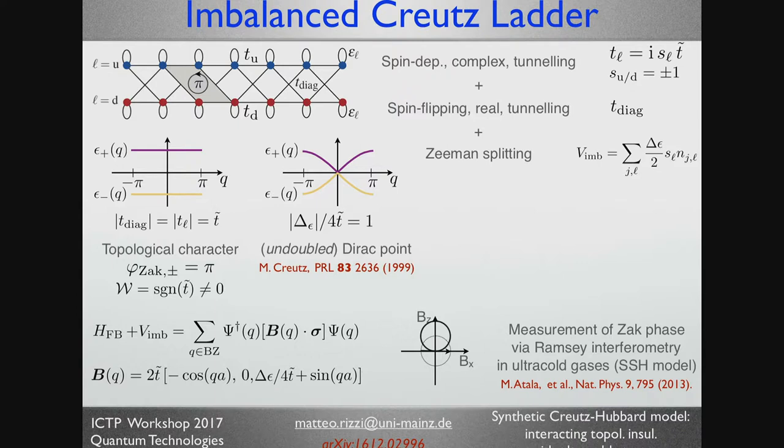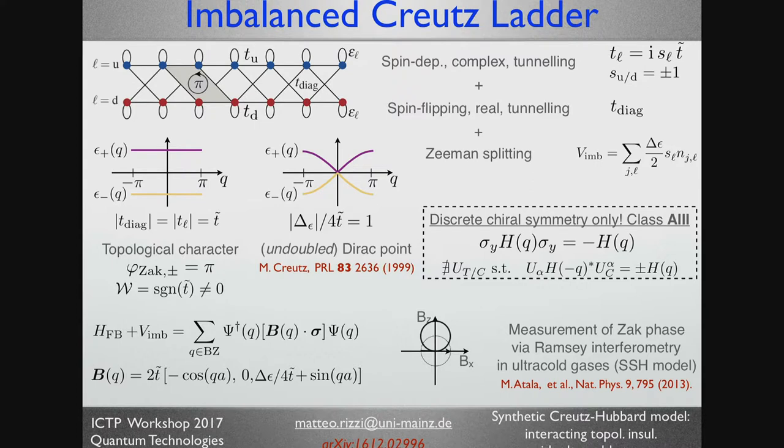So now what I want to do still at the single particle level is to add Zeeman splitting between the two ladders. And if you do that, you will realize that you bend the bands. Sorry for the twist. And they will touch at some point when the intensity of the Zeeman splitting is equal to the bandwidth. So they will touch and they will form an undoubled Dirac point. And that's actually the original motivation why Creutz introduced the model in order to avoid fermion doubling in high energy lattice gauge theory simulations.